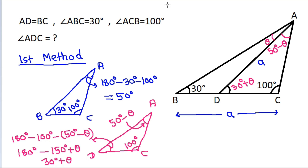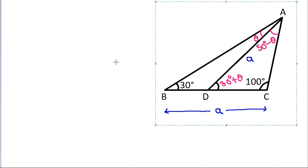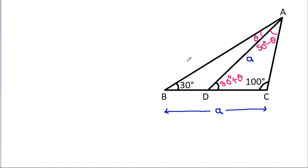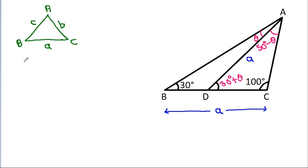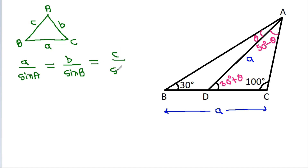And now, applying the sine rule. In triangle ABC, if BC is a, AC is b, and AB is c, then a divided by sin A equals b divided by sin B equals c divided by sin C.